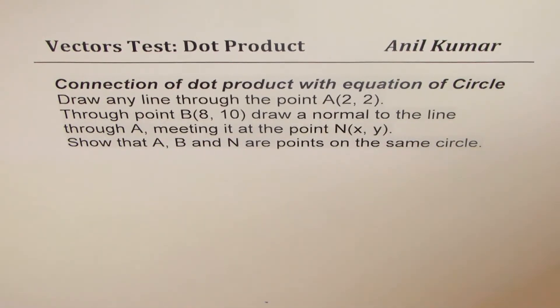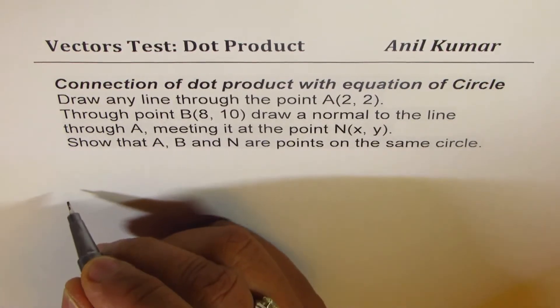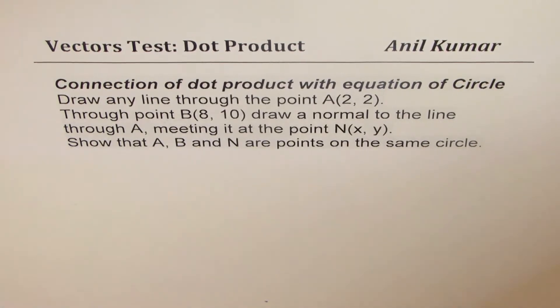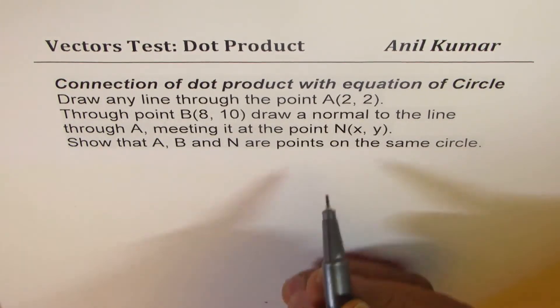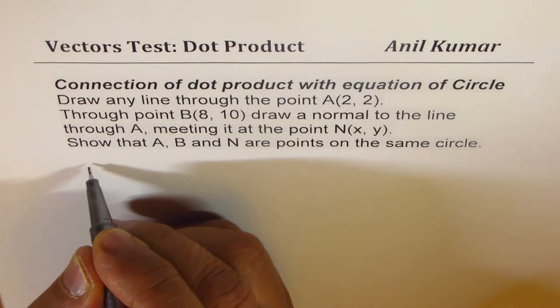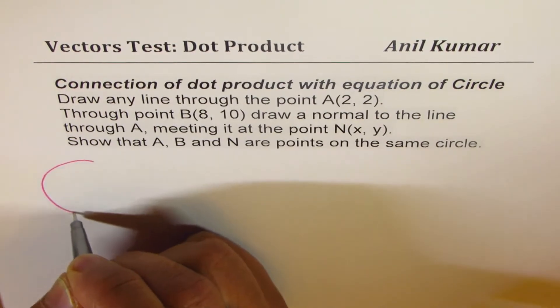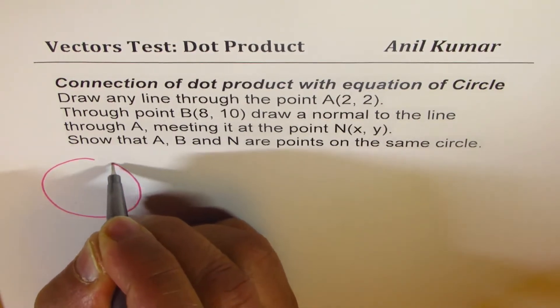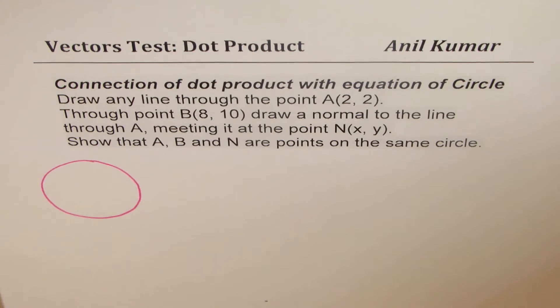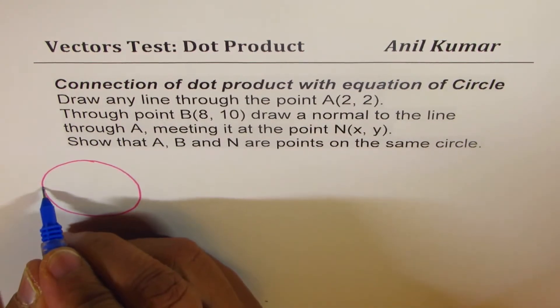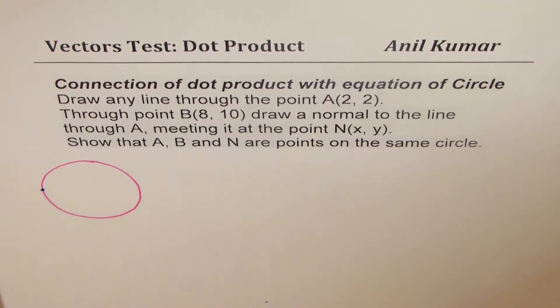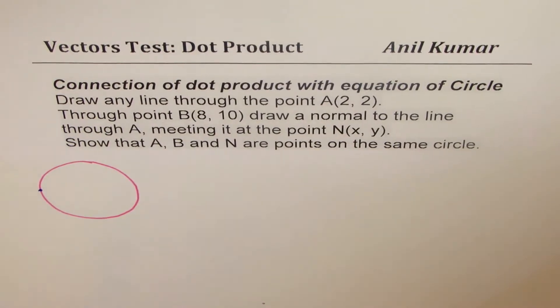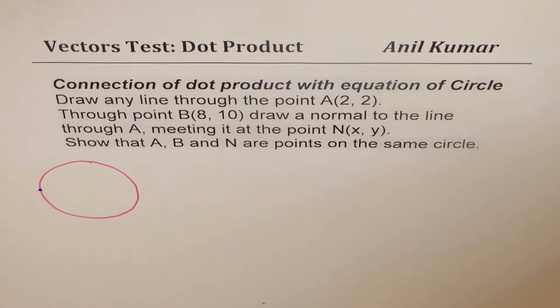So let's try to understand the situation. Since we want to show that A, B, and N are on the same circle, I'll go the other way. I'll draw a circle first, then take a point A on the circle. Let's say this is my point A on the circle, and from A I'm drawing any line.